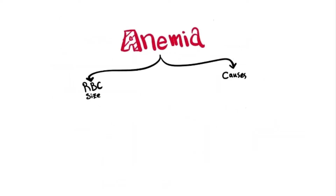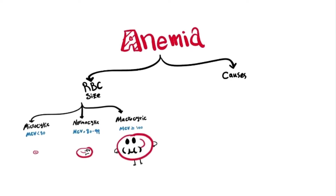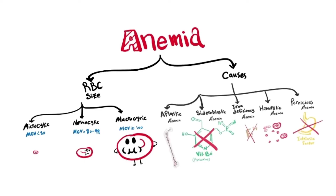Generally, when we talk about anemias, it's a very broad topic with different causes. But we can think about it generally related to the red blood cell size, which is related to the mean corpuscular volume. Less than 80 is microcytic, between 80 to 99 is normocytic, and above 100 is macrocytic. But more specifically, especially regarding management, we think about it related to the cause.